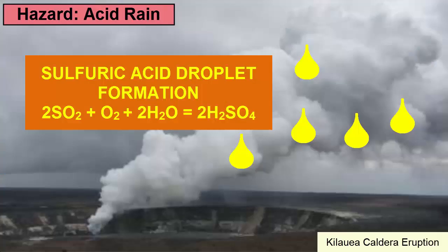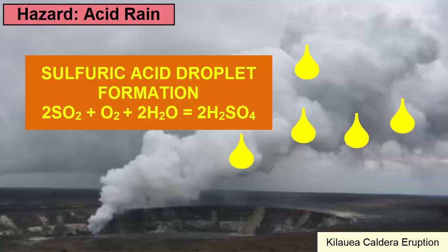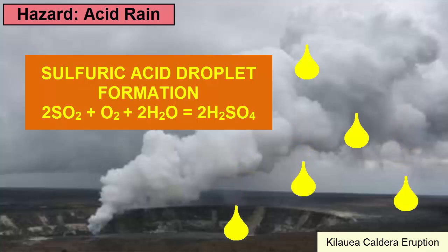Another hazard associated with volcanic gases comes from the sulfur dioxide gas that combines with water in the atmosphere and produces acid rain. If these droplets reach high into the atmosphere, they can reflect incoming solar radiation and lead to global cooling. At the surface, as they fall to earth, they can lead to increased decay of structures and fabrics, contaminate water, and lead to a temporary lull in growth of vegetation.